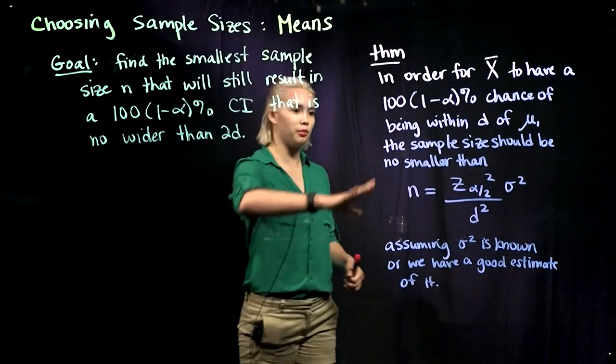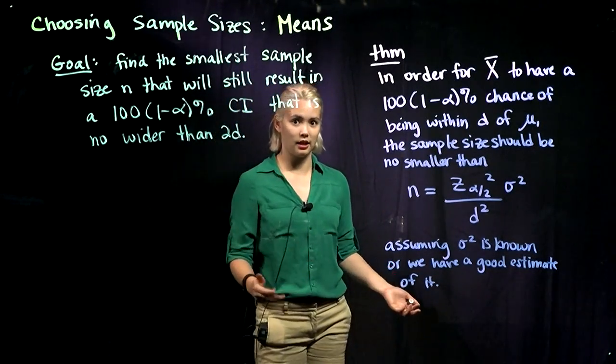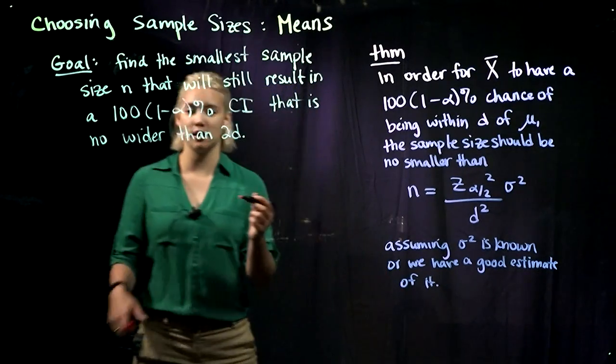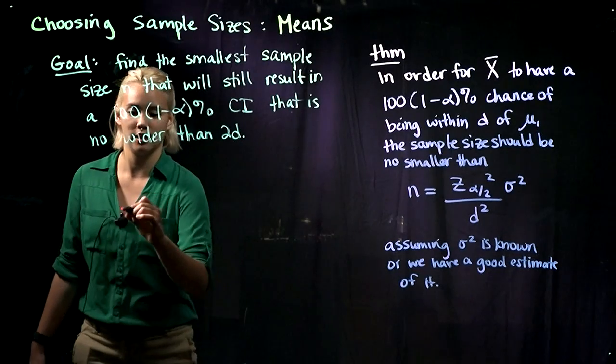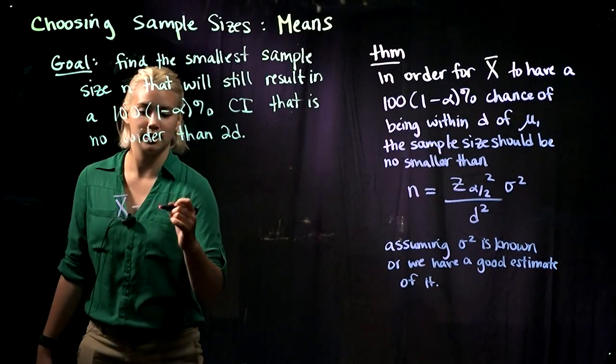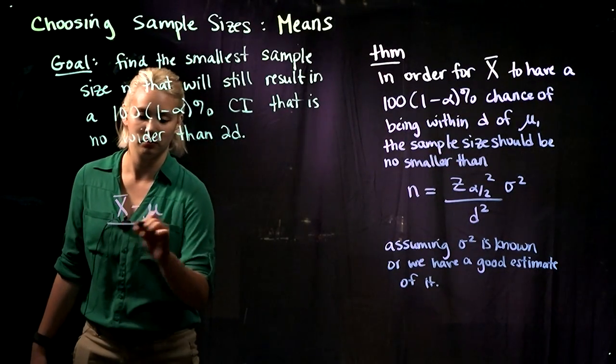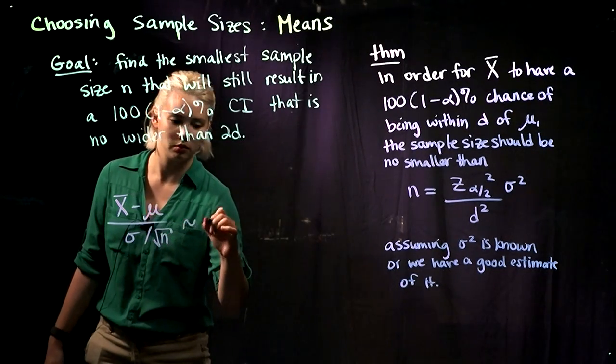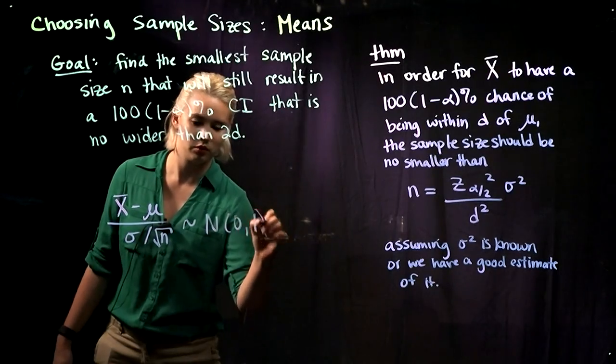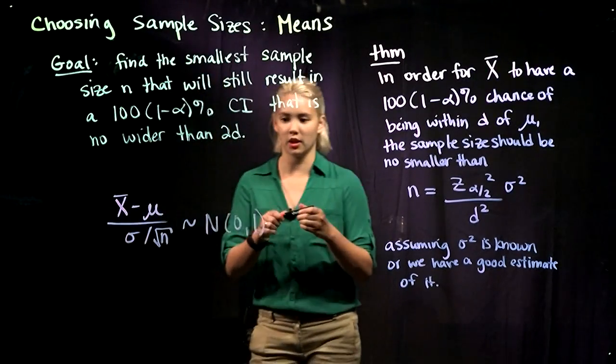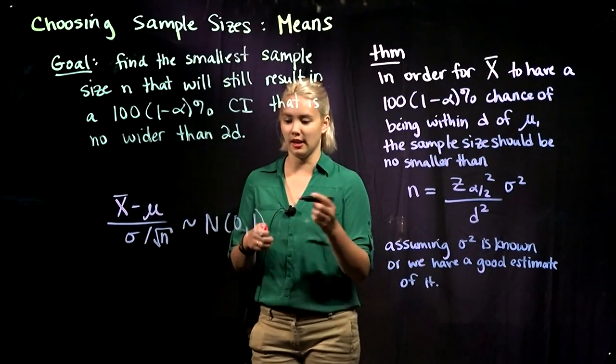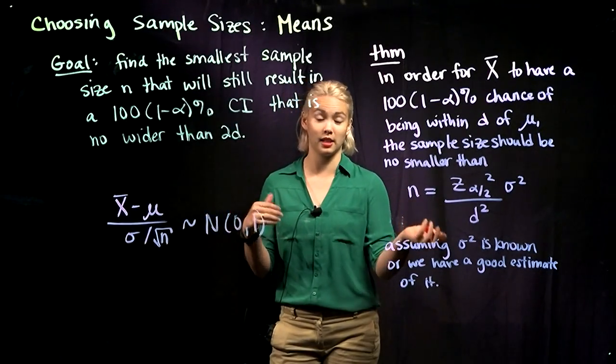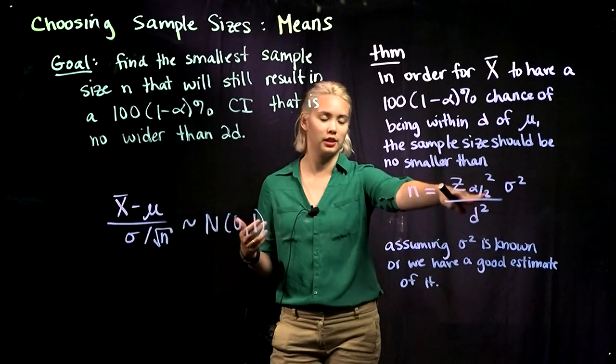If we want to prove this theorem, it's going to look a lot like the proof for the theorem for proportions. All of it is going to hinge on the fact that we have this central limit theorem. We'll be using this and the same setup as in the proportion video in order to get this here. Go ahead and do that on your own.